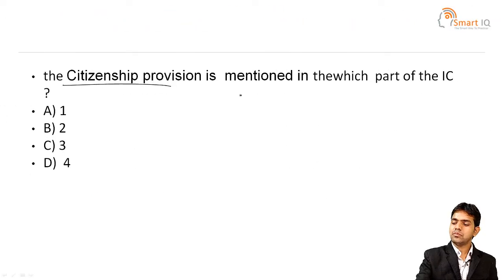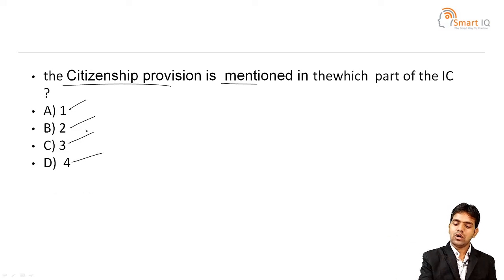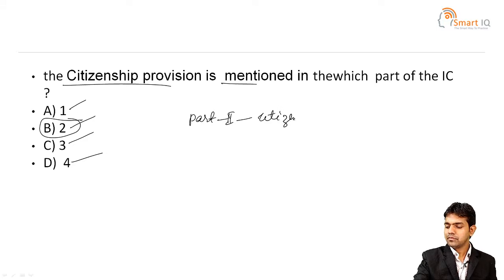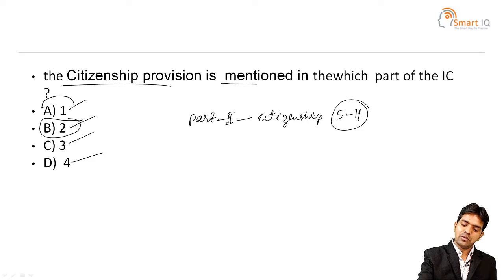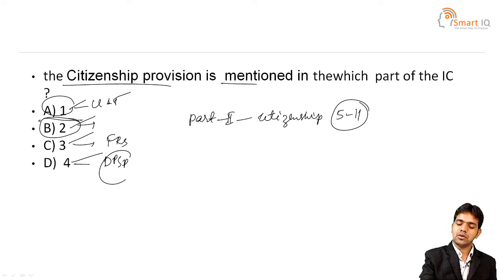Next question: The citizenship provision is mentioned in which part of the Indian Constitution? Option A: Part 1. Option B: Part 2. Option C: Part 3. Option D: Part 4. The answer is Part 2 — citizenship is covered under Articles 5 to 11. Part 1 relates to the Union and States, Part 3 to Fundamental Rights, Part 4 to the Directive Principles of State Policy.